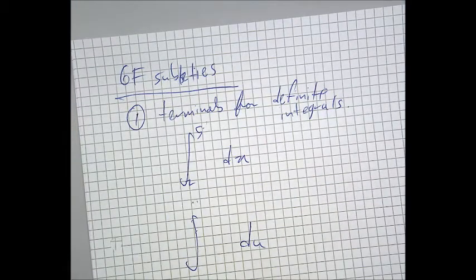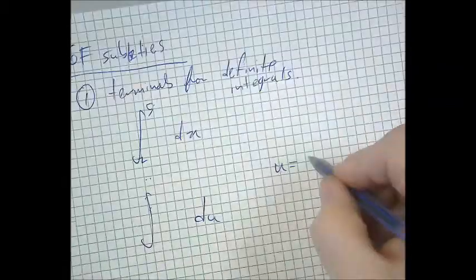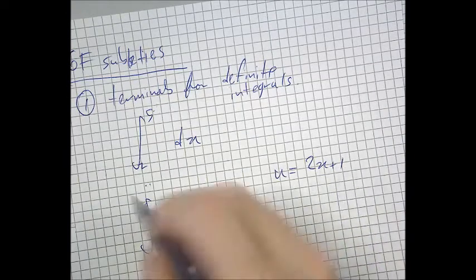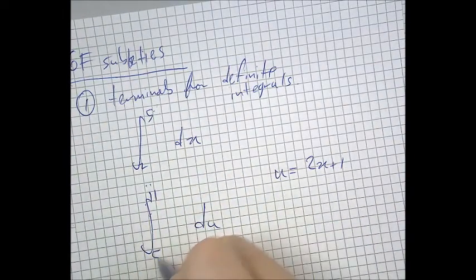Now that is never hard. You just convert them using your naming sentence. So if u was 2x plus 1, that would now be an 11, and that would be a 5.